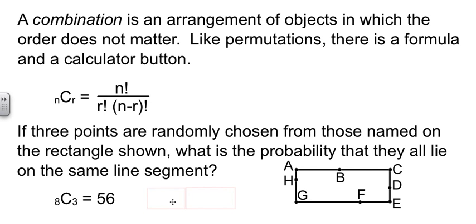Now, of those 56, there's 4 line segments. One here, 2, 3, 4. So there's 4 chances out of 56, which reduces to 1 out of 14.